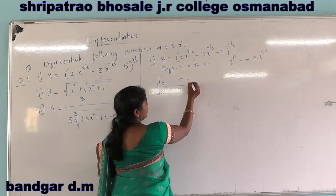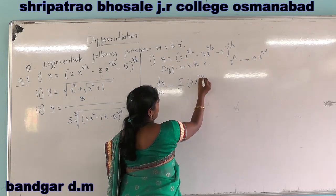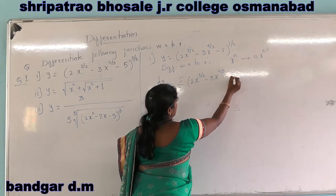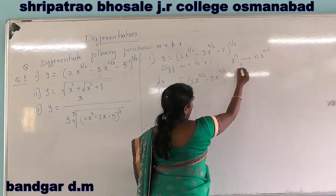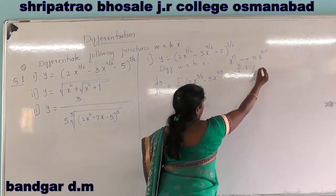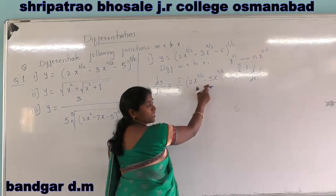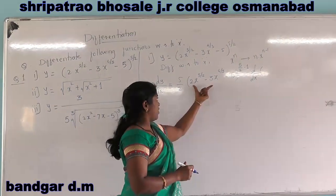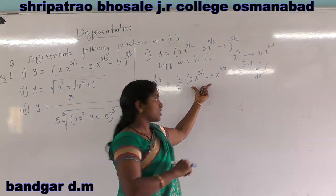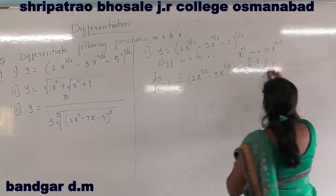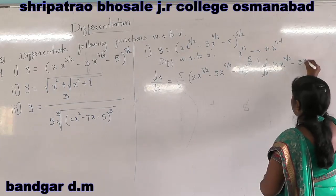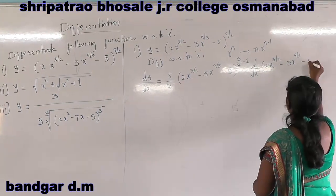So dy by dx: n is 5 by 2, applied to x raised to 3 by 2, minus 3x raised to 4 by 3, minus 5 raised to 5 by 2, then minus 1, into the derivative of the inner function. Instead of x there is a polynomial, so we differentiate 2x raised to 3 by 2, minus 3x raised to 4 by 3, minus 1.